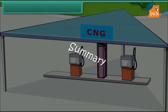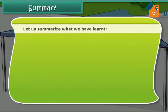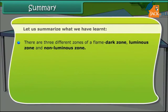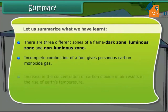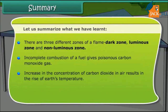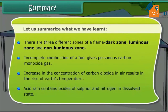Let us summarize what we have learned. There are three different zones of a flame: dark zone, luminous zone, and non-luminous zone. Incomplete combustion of a fuel gives poisonous carbon monoxide gas. An increase in the concentration of carbon dioxide in air results in the rise of Earth's temperature. Acid rain contains oxides of sulfur and nitrogen in dissolved state.